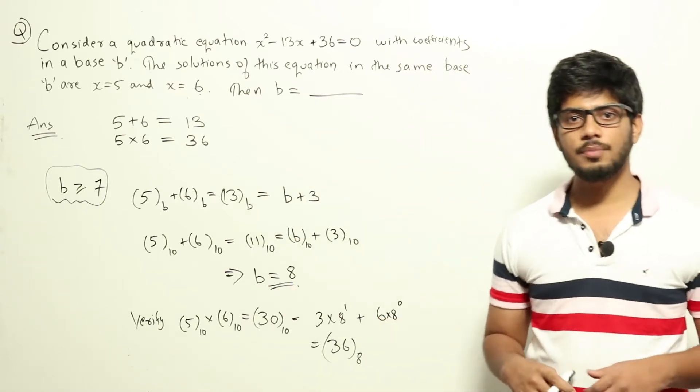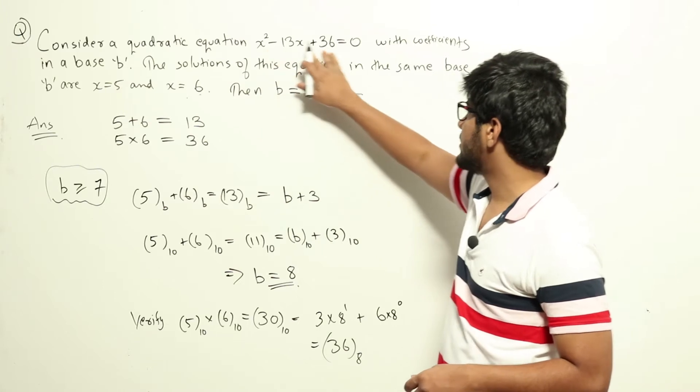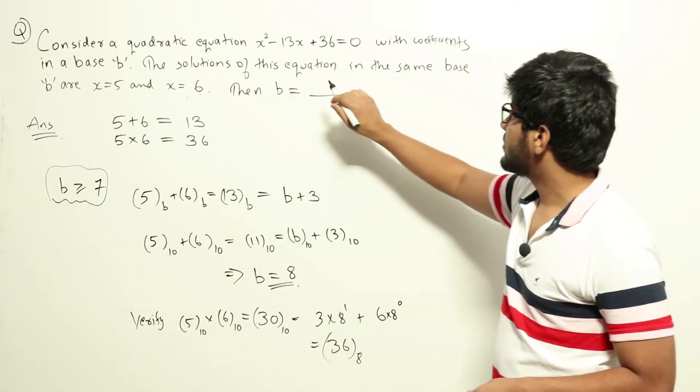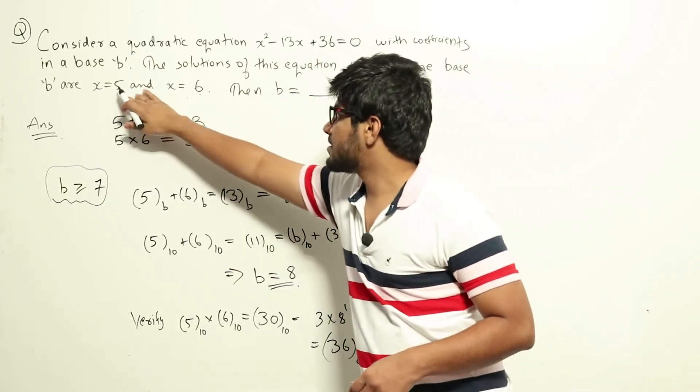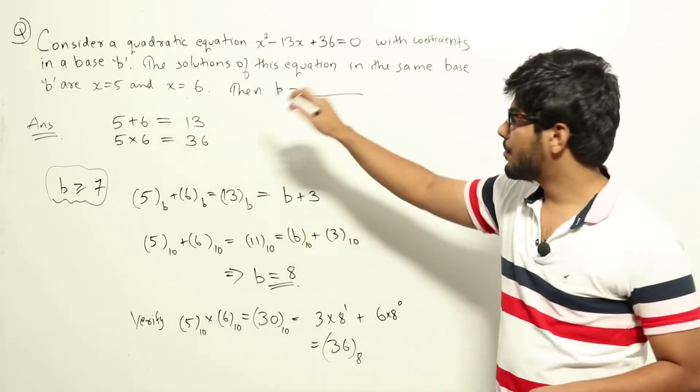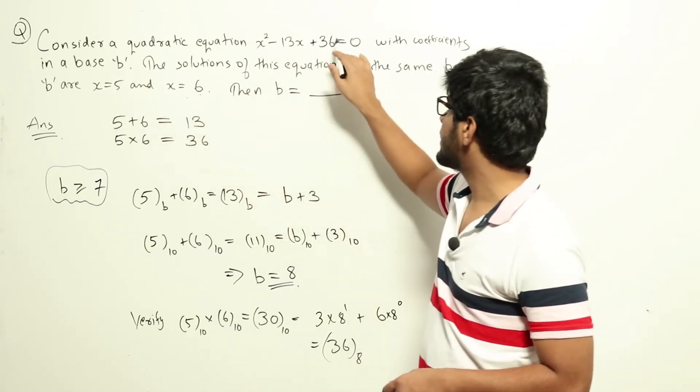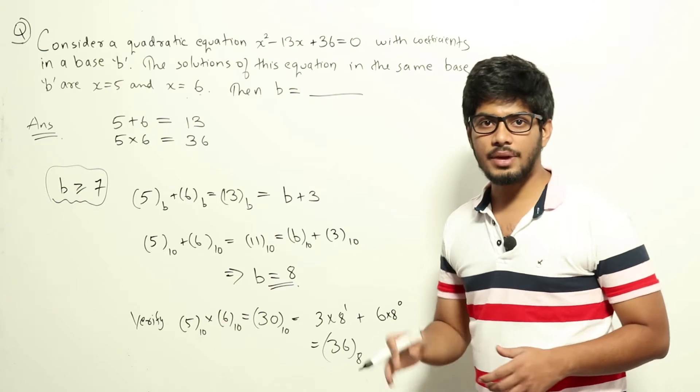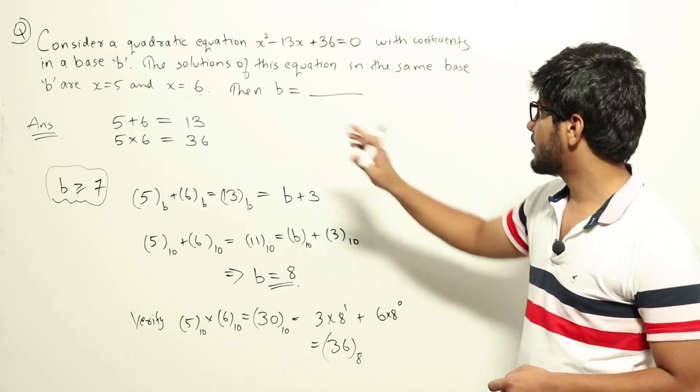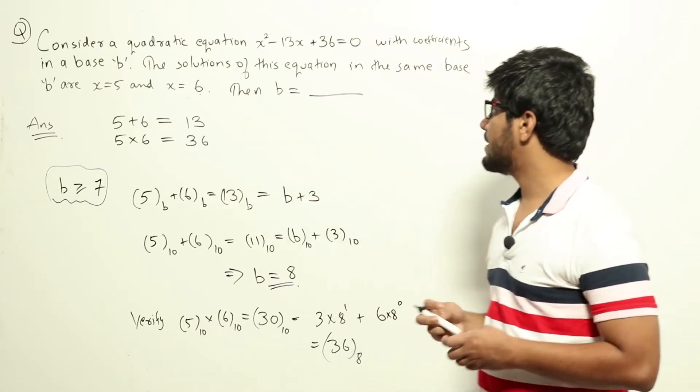So this is a question from number systems. They have given us this quadratic equation, and the solutions are x equals 5 and x equals 6. But these numbers 5, 6, 13, and 36 are not in base 10. These are in some base B which we don't know, and the question is what the base B is.